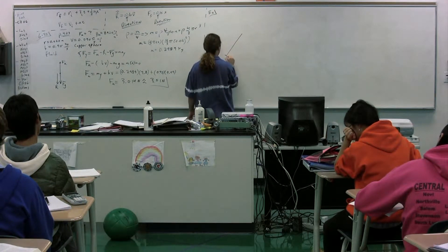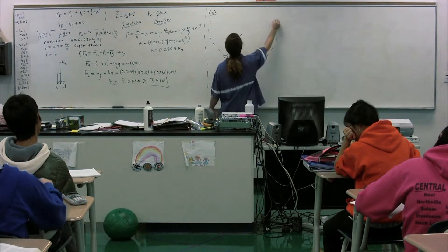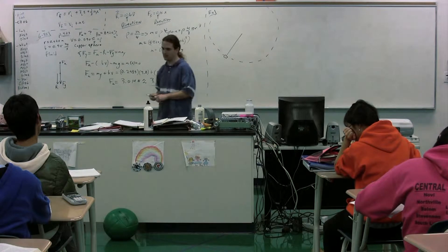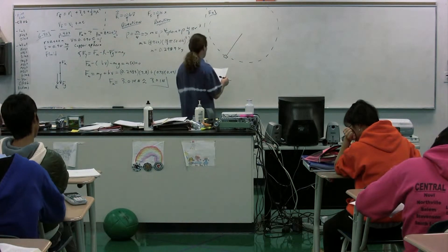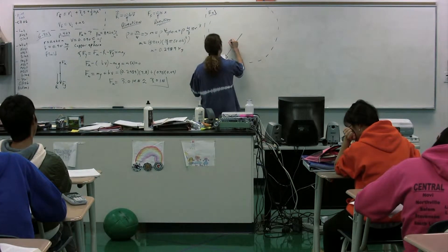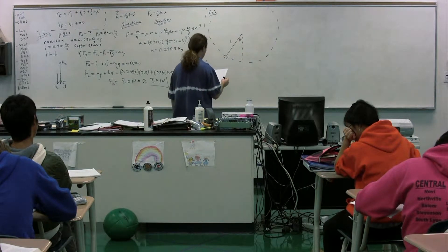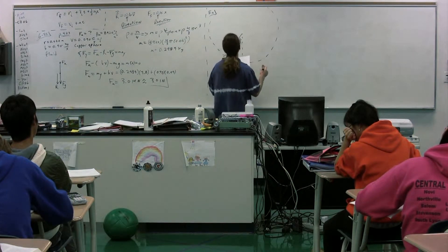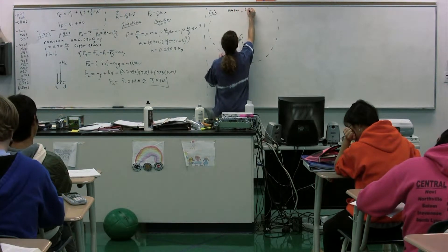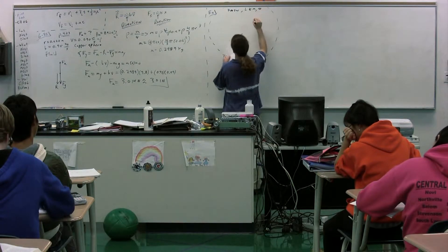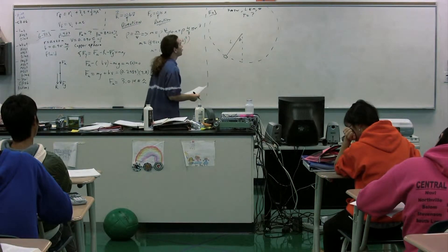Again, we have a stopper on a string, this time moving in a circle. We are going to define this as the length L and this as theta. We know L, the mass, and theta, and we're going to start out by figuring out the tension.